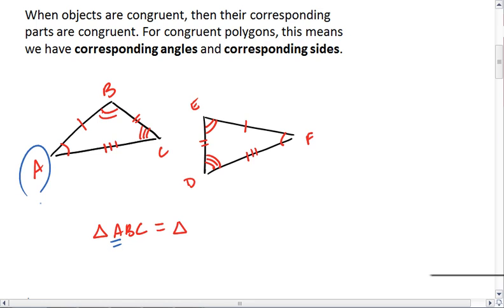So we look at angle A. Its corresponding angle is angle F. So in our congruency statement, angle A needs to be paired with angle F.